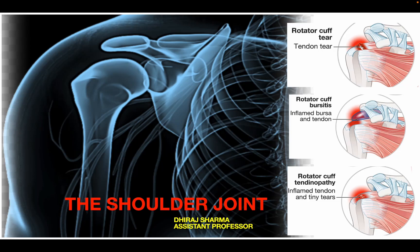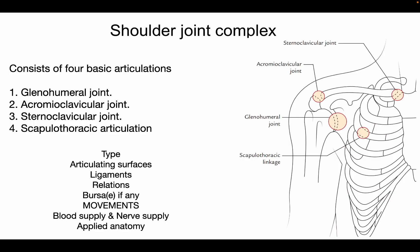Good morning. Today's lecture is regarding the shoulder joint. Before dealing with the shoulder joint, let's know about the shoulder joint complex, which consists of four basic articulations: the glenohumeral joint, acromioclavicular joint, sternoclavicular joint, and scapulothoracic articulation.